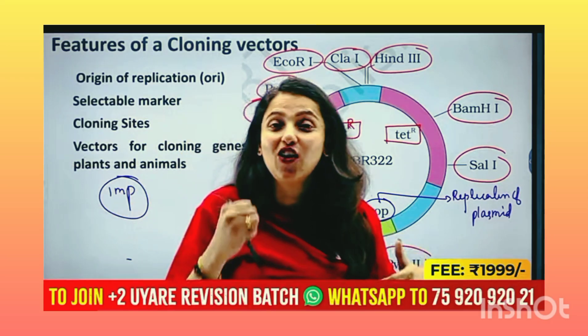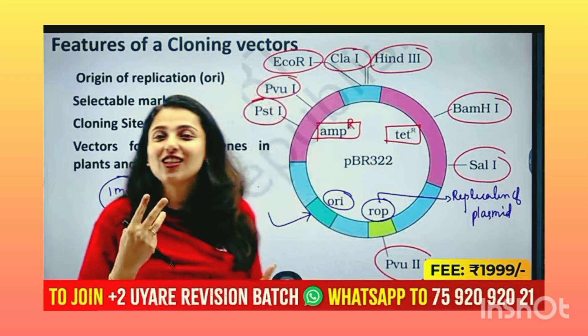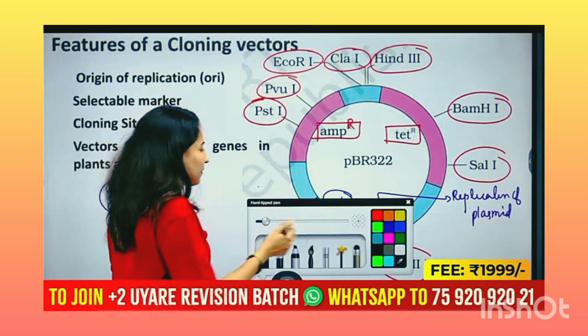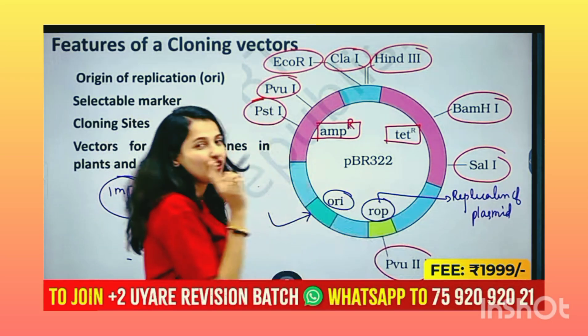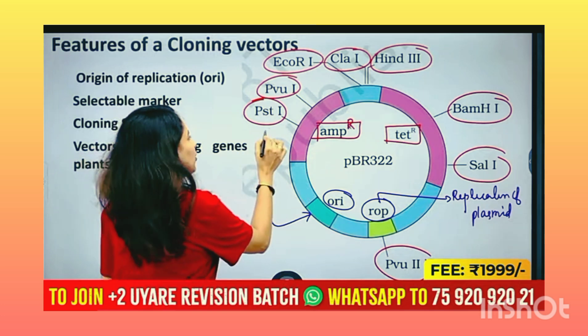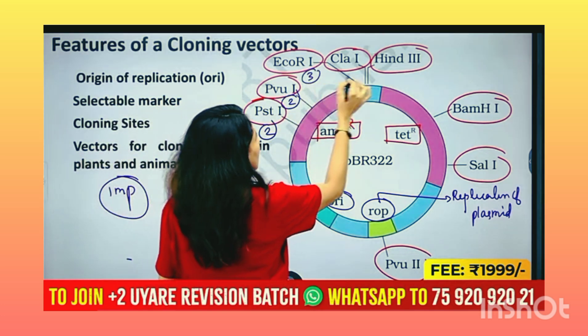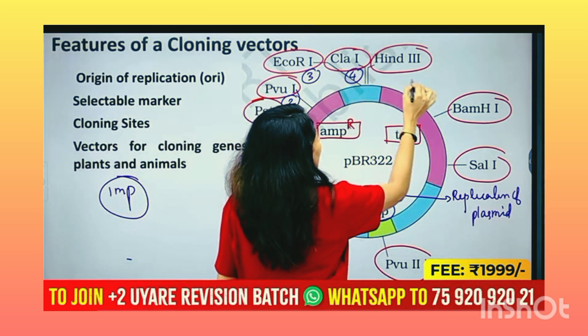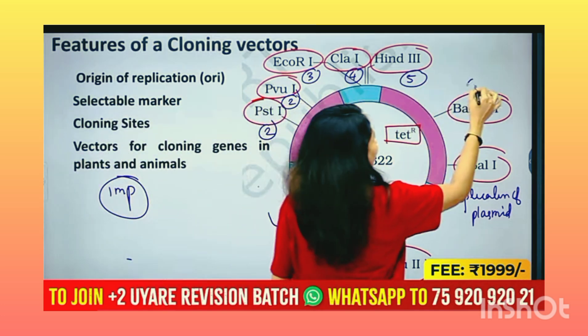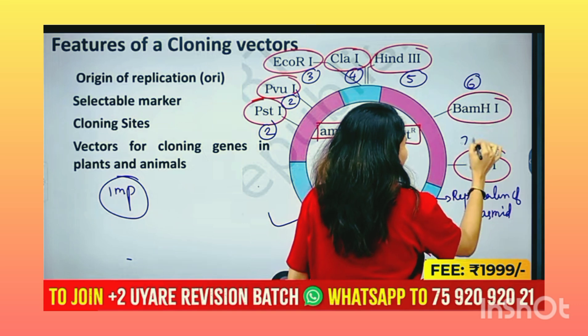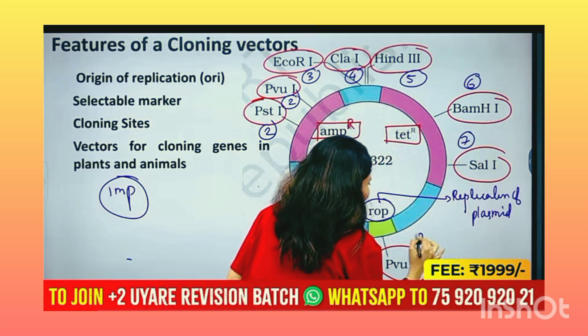How many cloning sites have you? 1, 2, 3, 4, 5, 6, 7, 8.